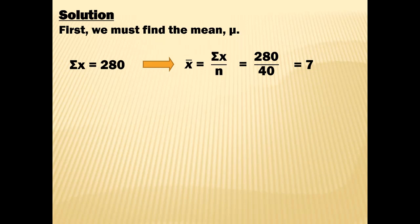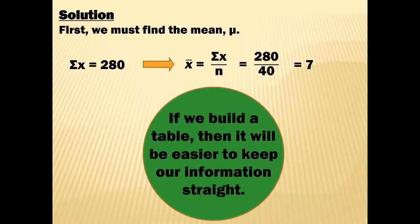The means in this section's problems have come out really nicely. On homework they don't always, but on any exam or quiz, I'll make sure the mean is a nice number when you have to compute a variance or standard deviation — because a decimal mean makes the table calculations much more difficult. So we have our mean of 7, and we'll build a table that incorporates frequency.